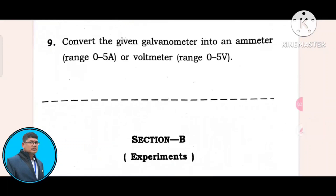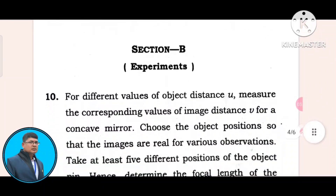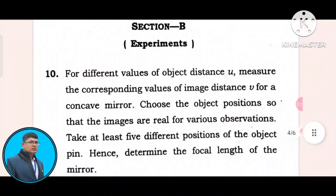Convert the given galvanometer into an ammeter of voltmeter range 0–5A. Then Section B experiment.